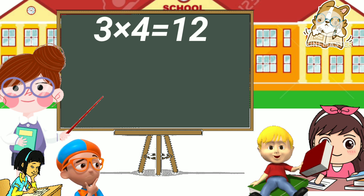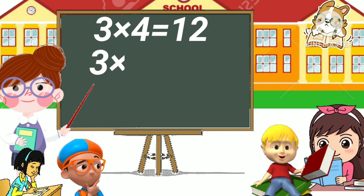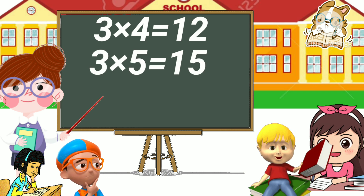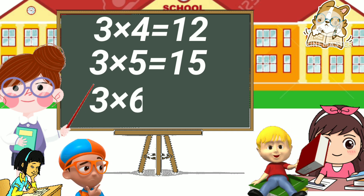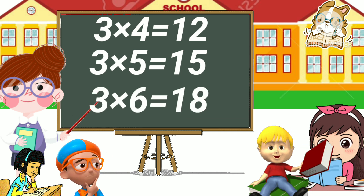Three four has twelve, three five has fifteen, three six has eighteen.